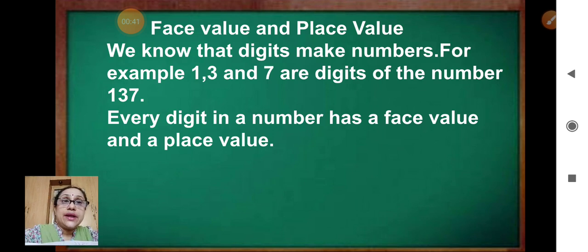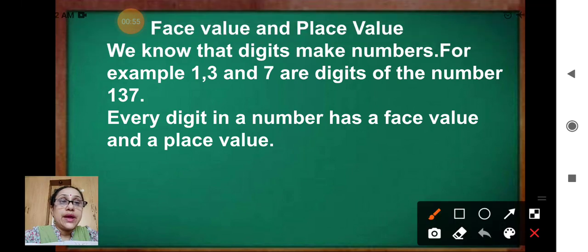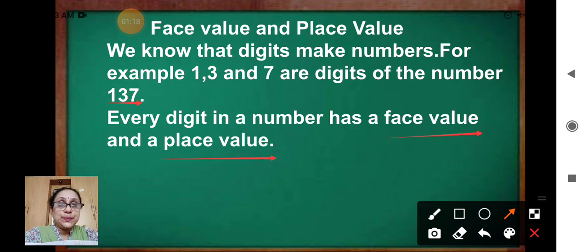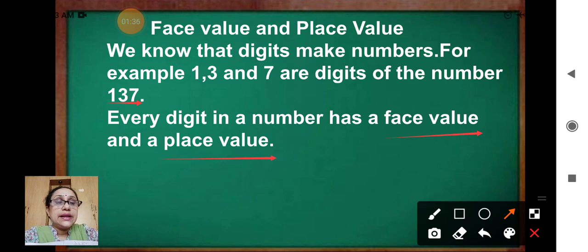Face value and place value. We know that digits make numbers. For example, 1, 3 and 7 are digits of the number 137. Every digit in a number has a face value and a place value. Now children, when you come to your classroom, you all have places to sit.